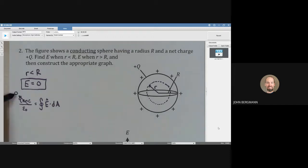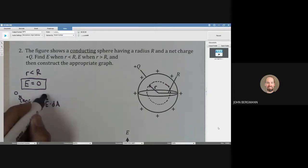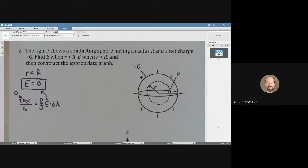And if q enclosed goes to zero, when we integrate the area, this Gaussian cylinder definitely has an area. So that's not equal to zero, which means that the electric field has to be zero. So you can prove that by Gauss's law.